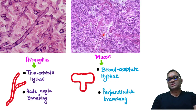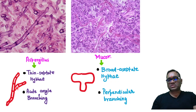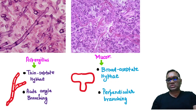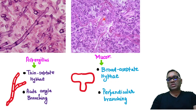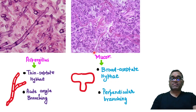Mucor mycosis — you can see they will be broad aseptate hyphae. They are broader in comparison, with no septa, and there is perpendicular branching. You can notice the broad aseptate hyphae and perpendicular branching, which is suggestive of Mucor mycosis.